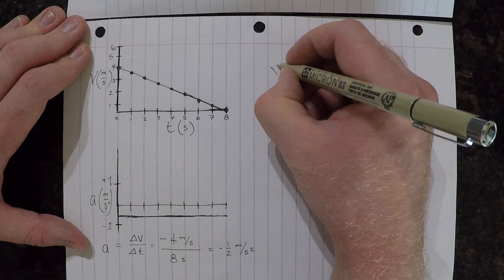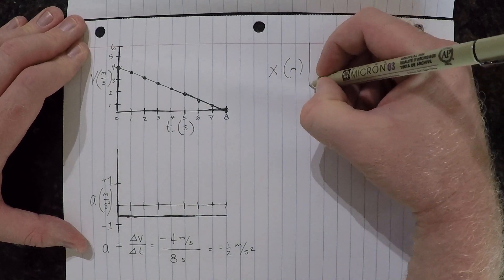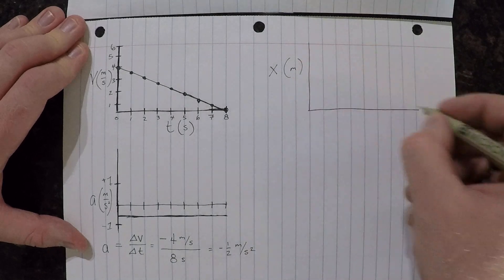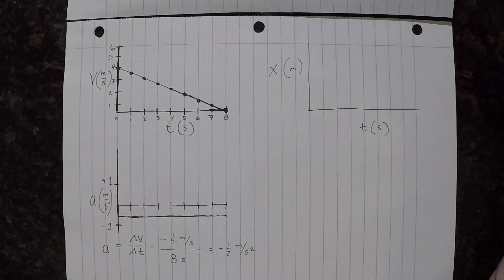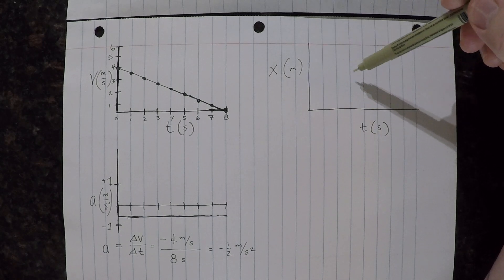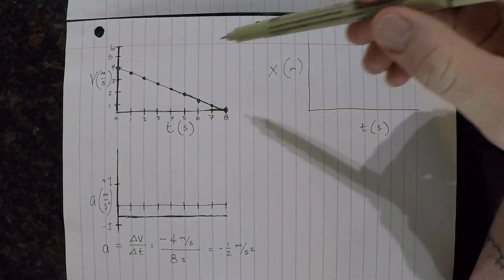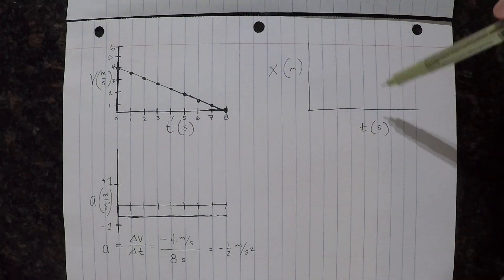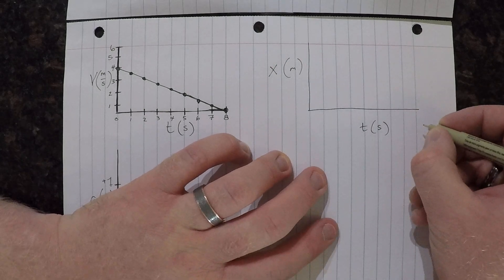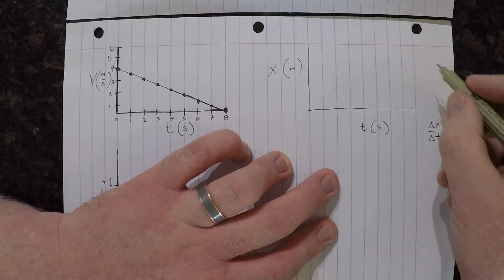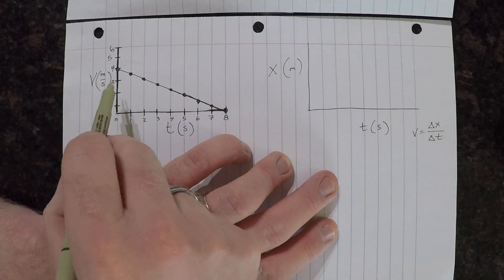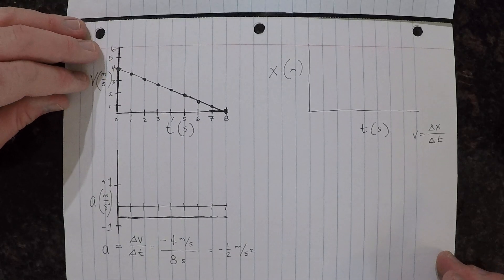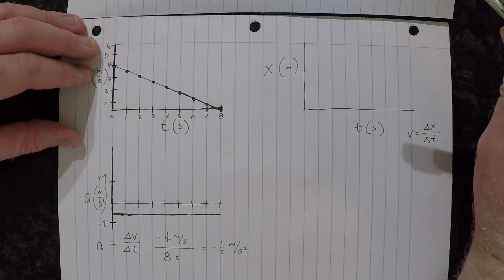Now let's look at position, which we'll call x, in meters over seconds. Generally, because we have a negative acceleration, as time goes on the slope of our x versus time graph should not be constant. The slope of x versus time — that is, the change in x over change in time — equals the velocity. And notice how velocity is changing. Which means if velocity is decreasing to a smaller number, we start with a higher slope and end with a lower slope.